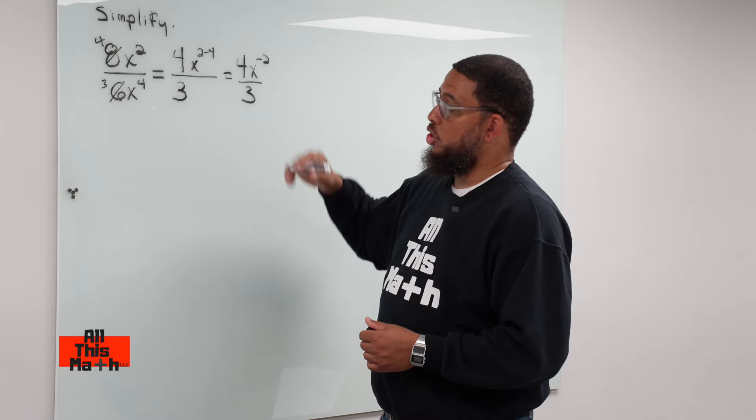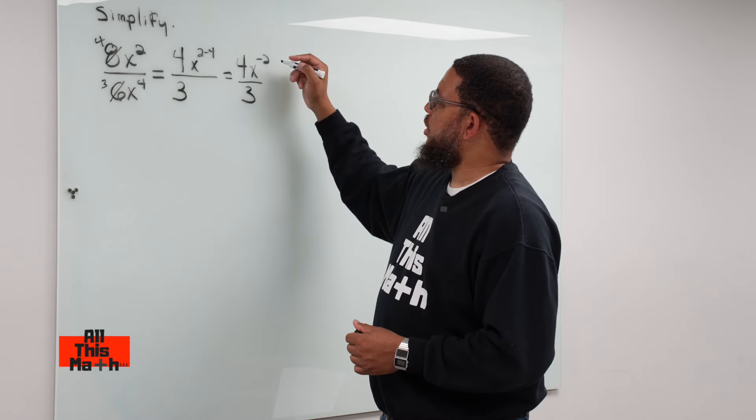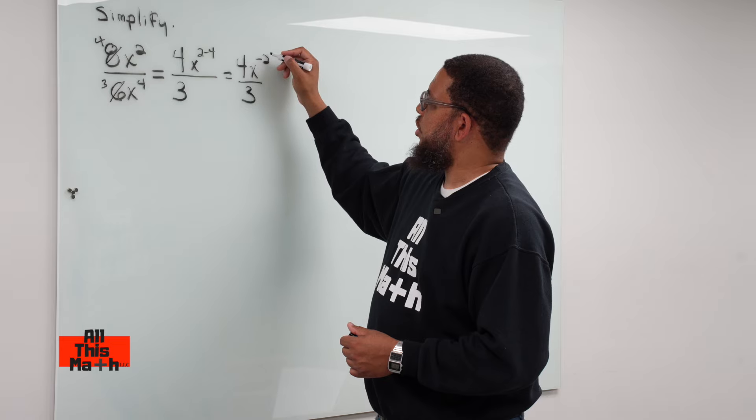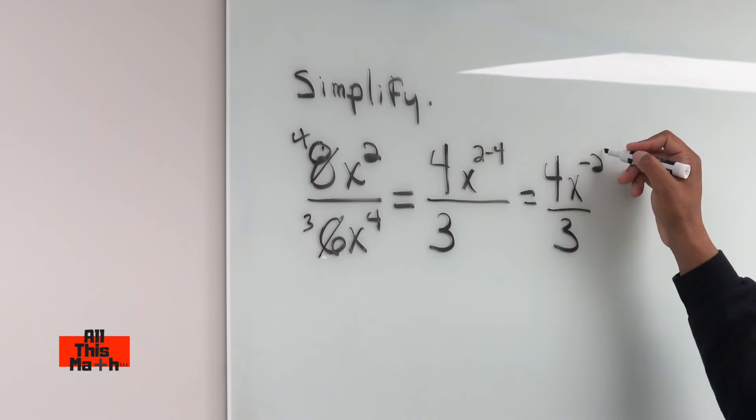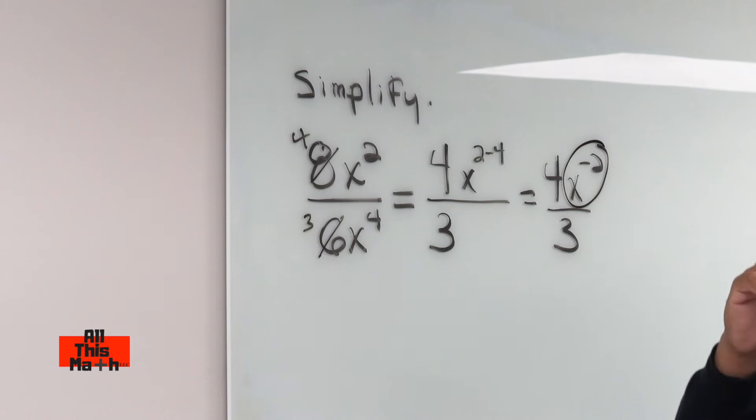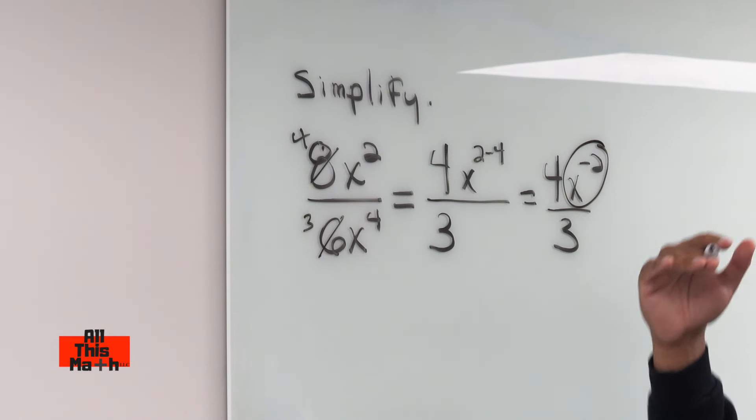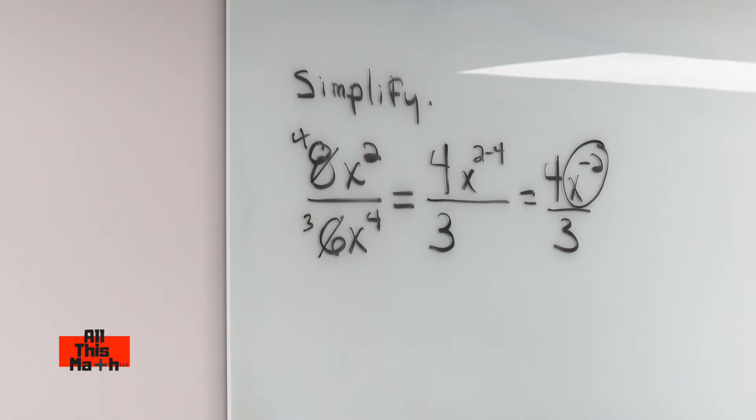Whenever you have a negative exponent and you want to turn it positive, all you essentially need to do is you take that term that has the negative exponent, and you're going to move it to the other part of the fraction. So if it's in the numerator, you're going to move it to the denominator. If it was in the denominator, you'll move it to the numerator.